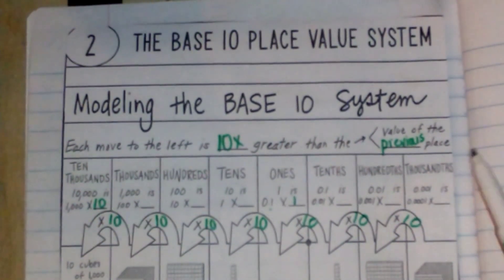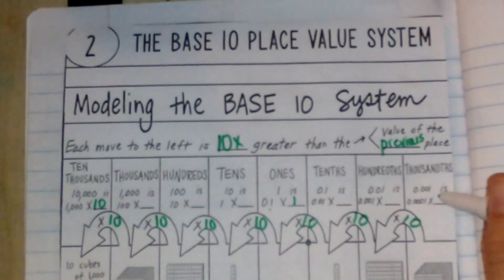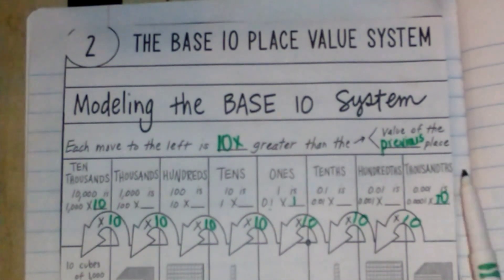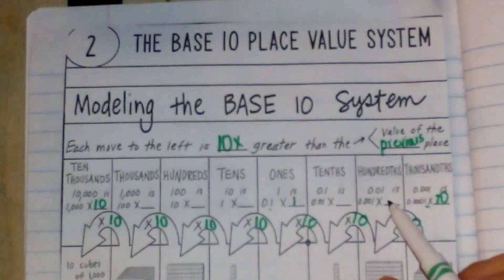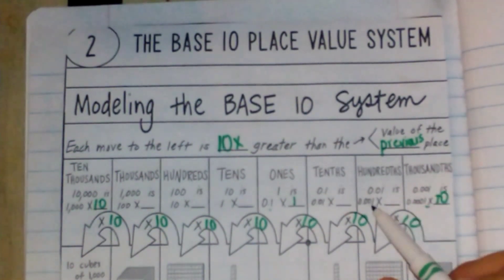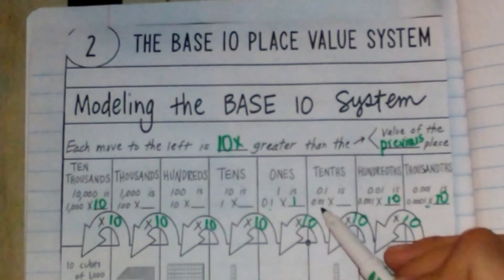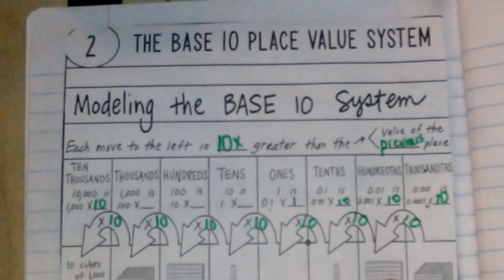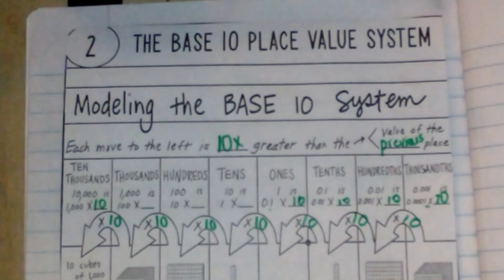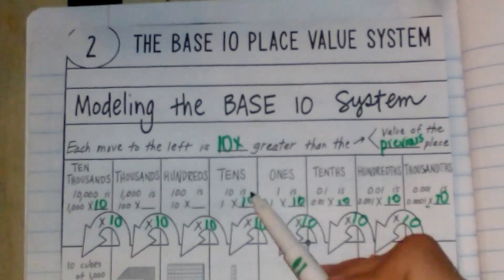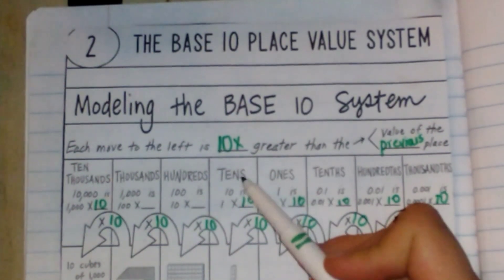So if I start here — to get one thousandth, it is one ten-thousandth times 10. One ten-thousandth would be the one over here, but we don't have it. One hundredth is one thousandth times 10. If I multiply it by 10, one hundredth times 10 is a tenth. To get one, it is one tenth times 10. A ten is one times 10. A hundred is ten times 10.